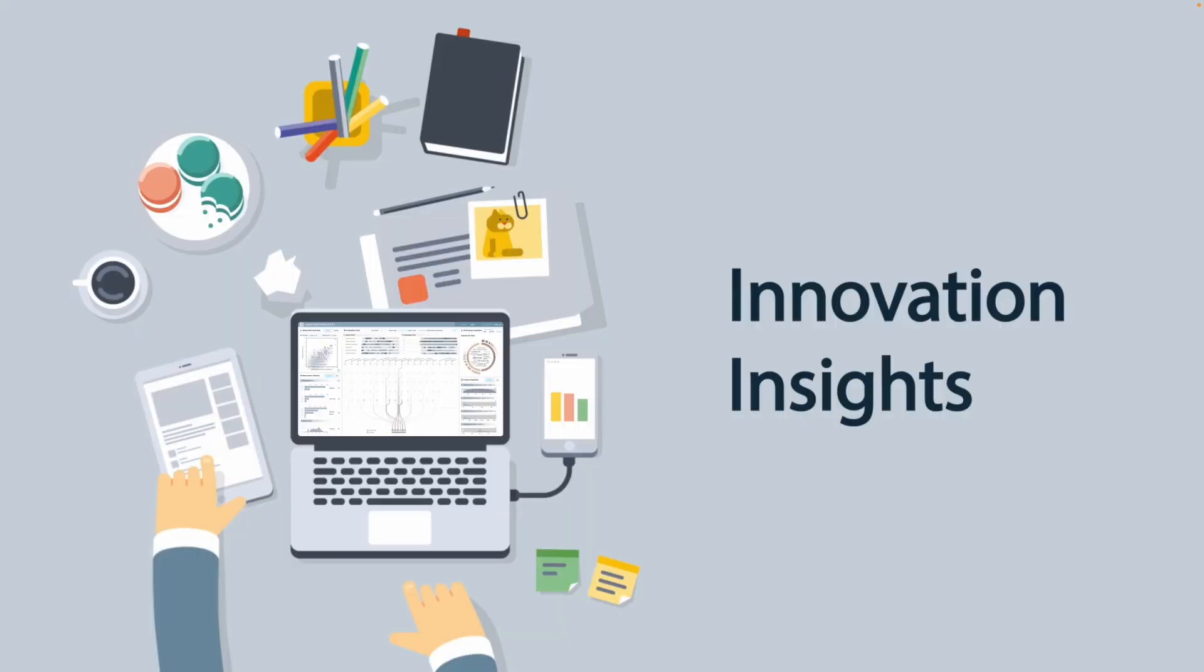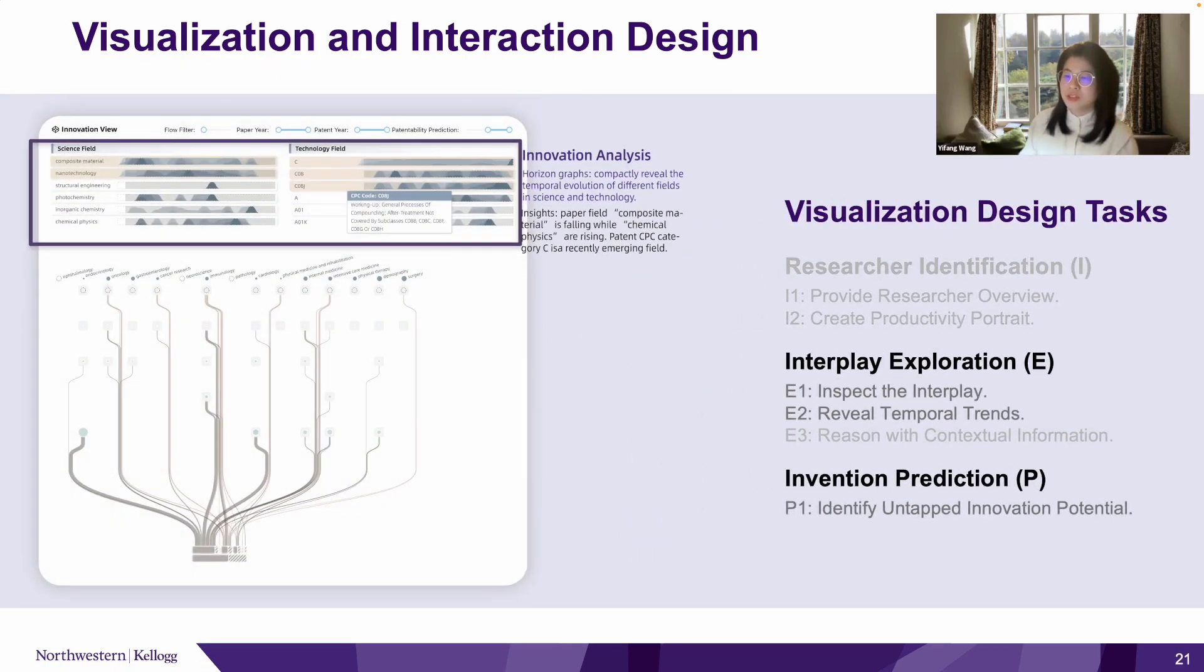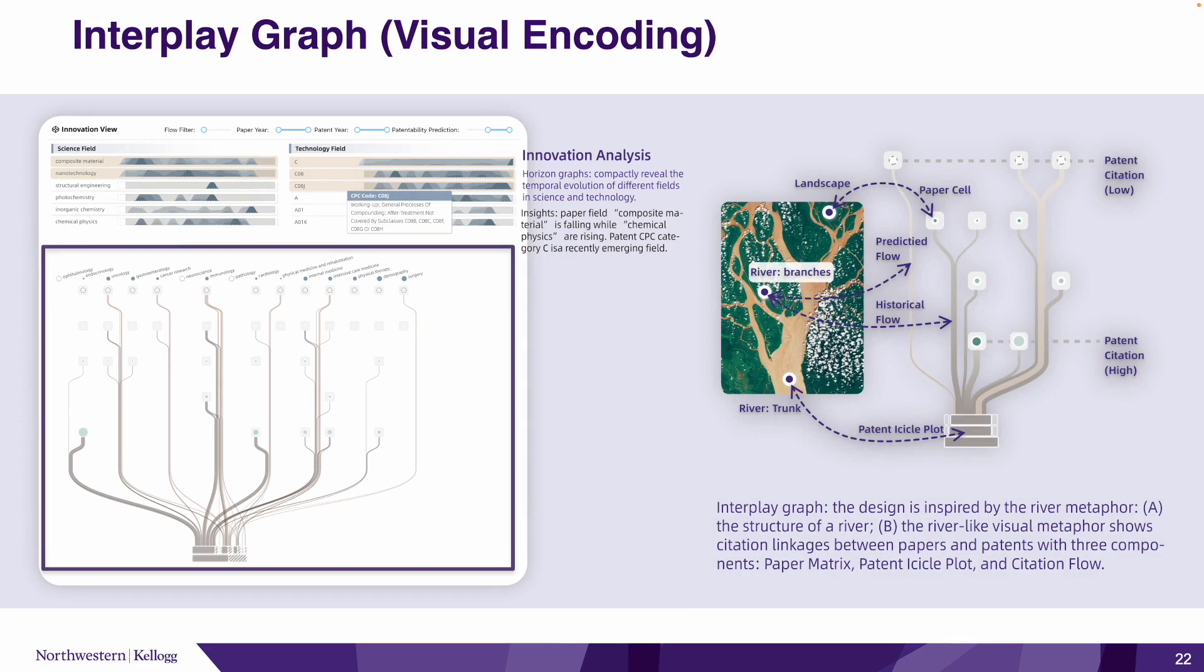Putting all these measures and the prediction results together, we design and develop Innovation Insights. Our system has five components. The researcher overview and the statistics view are for the individual-level analysis with a set of measures and demographic information. The innovation view shows the detailed interplay between science and technology. Two groups of horizon charts show the temporal evolution of papers and patents, respectively.